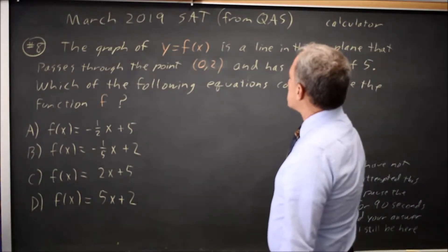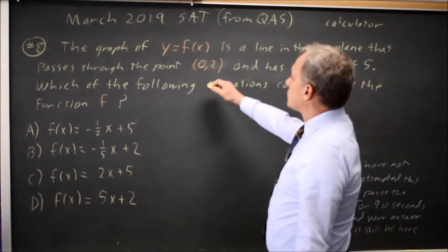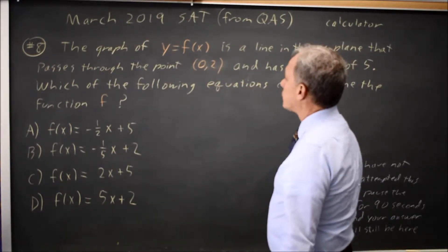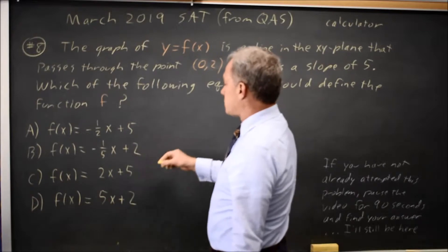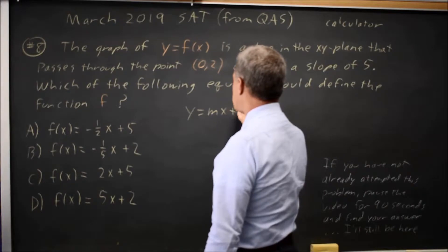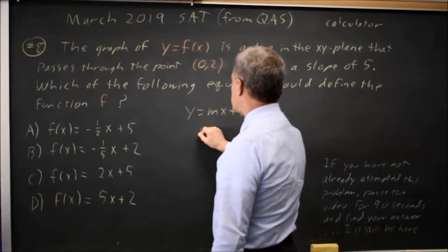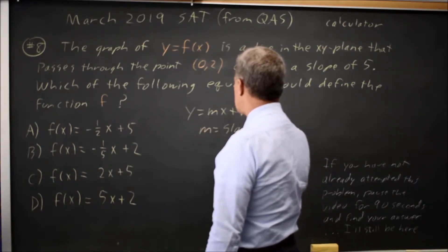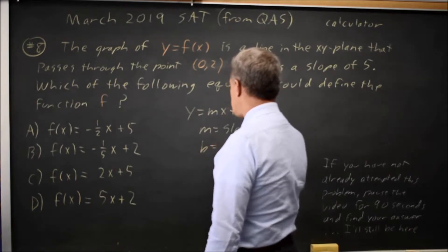Okay, they tell us that the line passes through a given point and has a slope of 5, and all our lines are in slope-intercept form, y equals mx plus b, where m equals slope and b equals intercept.